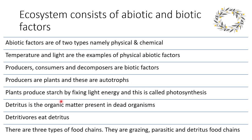Plants produce starch by fixing light energy and this is called photosynthesis. Detritus is the organic matter present in dead organisms. Detritivores feed on detritus — that means they eat detritus.